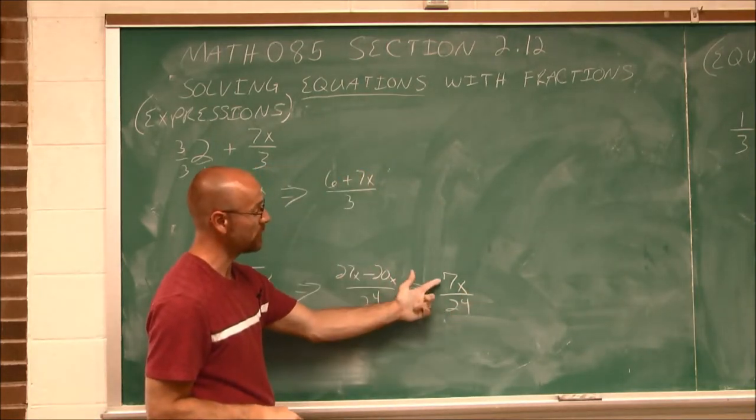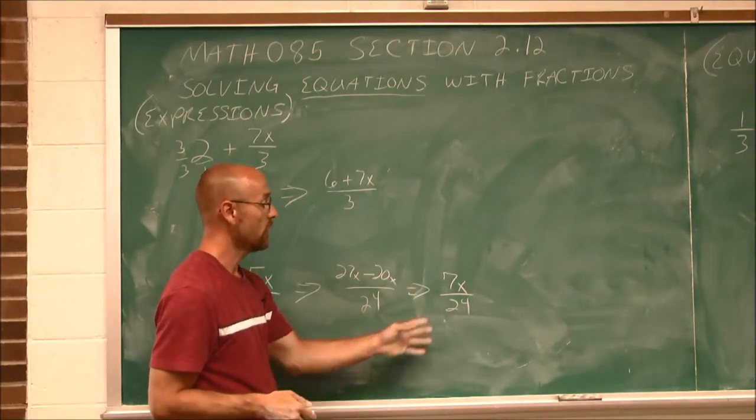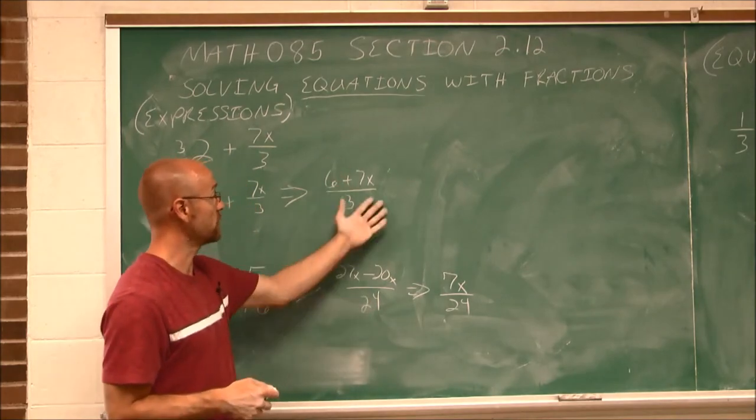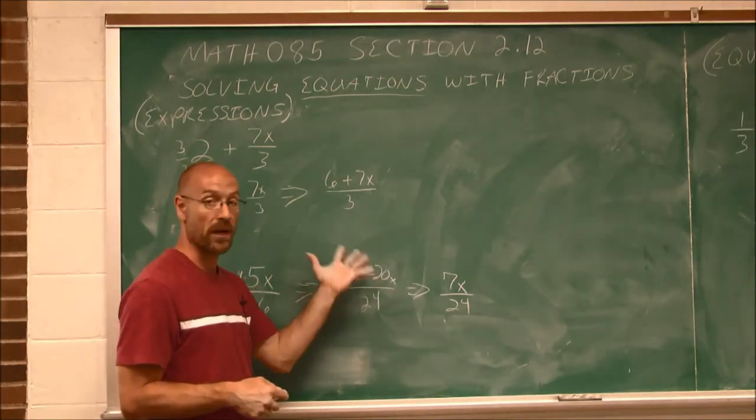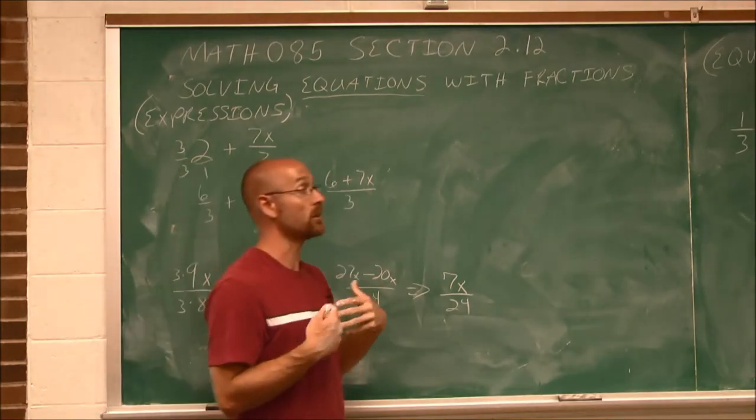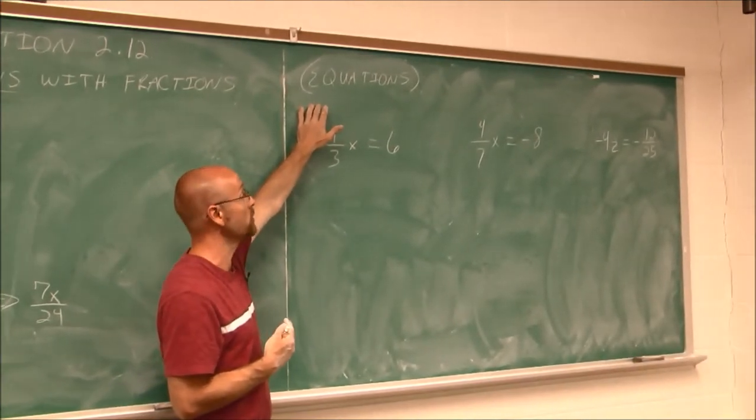27x minus 20x would leave us with 7x over 24. And we always check to see, can I reduce this? 7 and 24 have no common factors. So notice in both of these, I still don't know what x is. It is just a simplified expression. Expressions do not tell us what the values are.